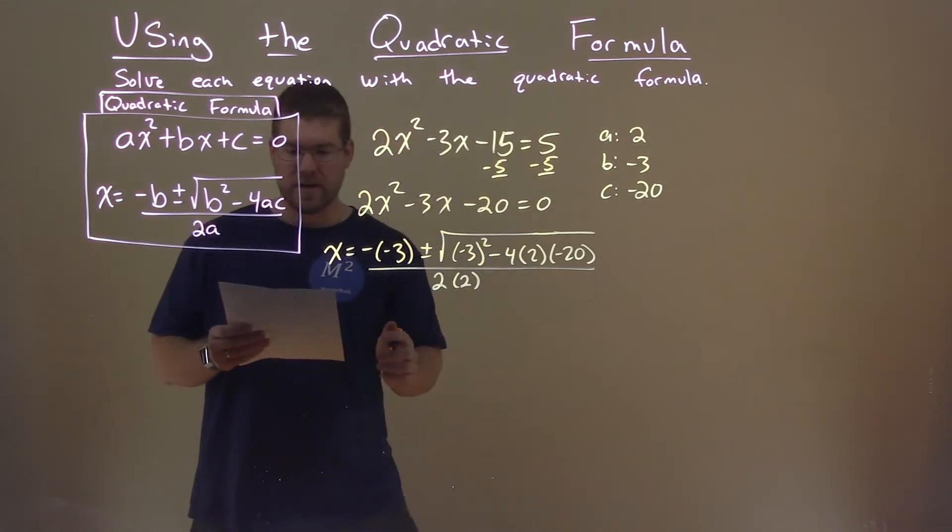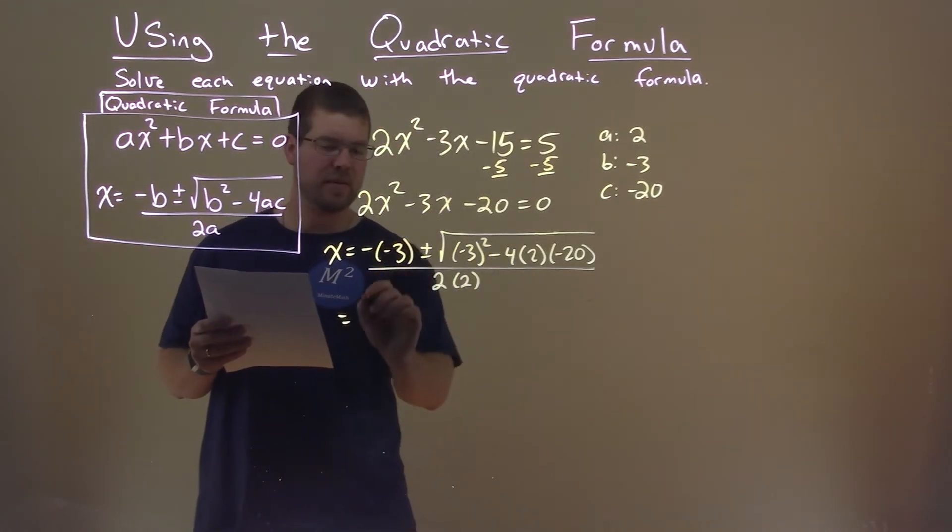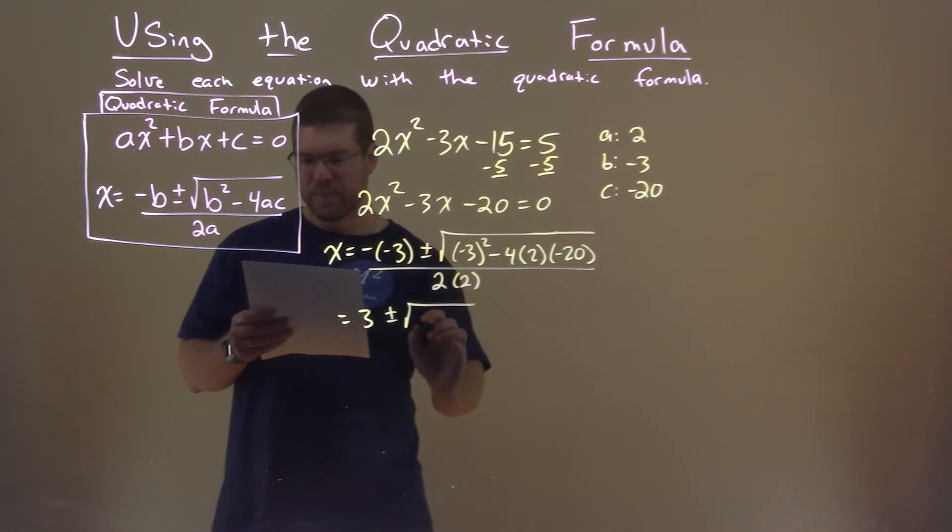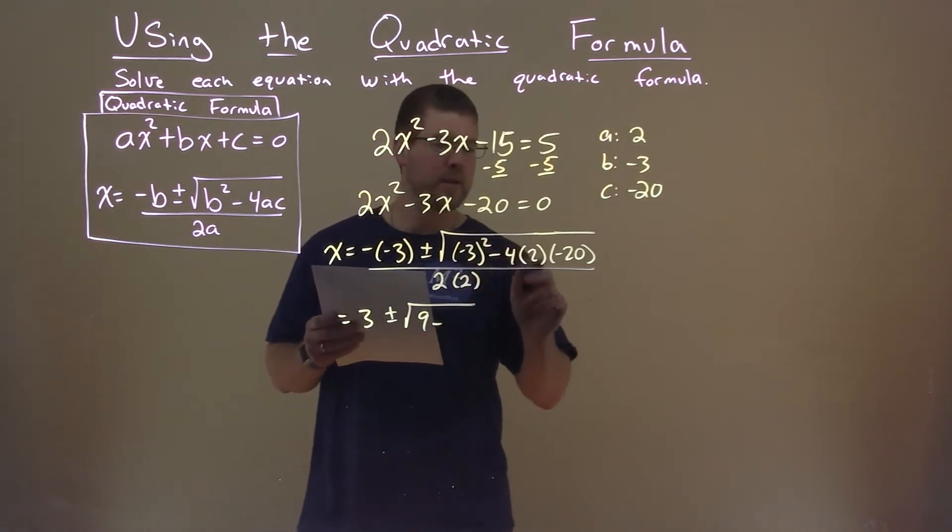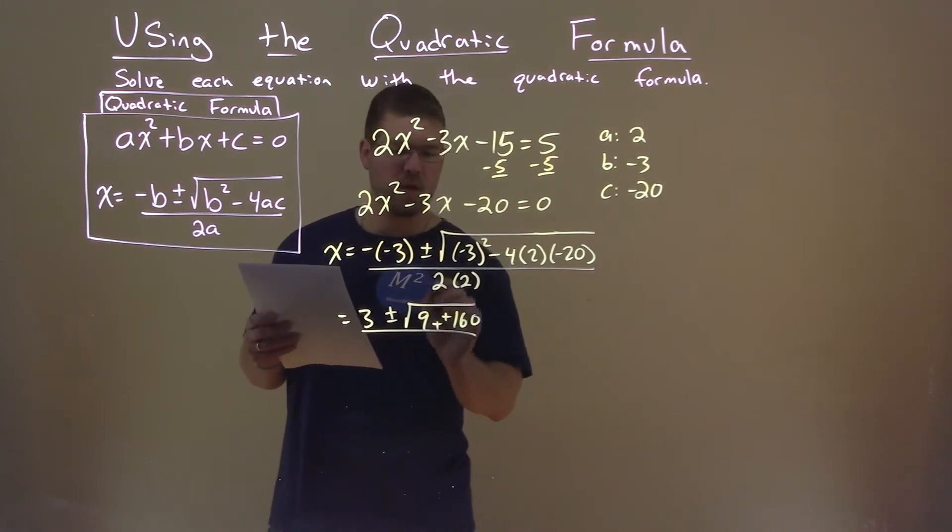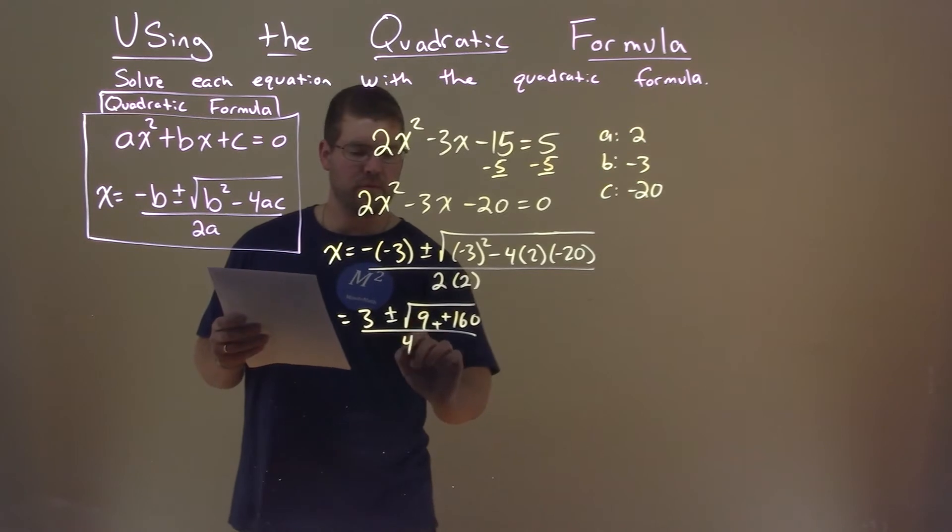So now we want to simplify this. Negative negative 3 is a positive 3, plus or minus. Negative 3 squared is a 9. Minus 4 times 2 times negative 20 is a negative 160, and a negative minus a negative is like adding a positive. 2 times 2 is 4.